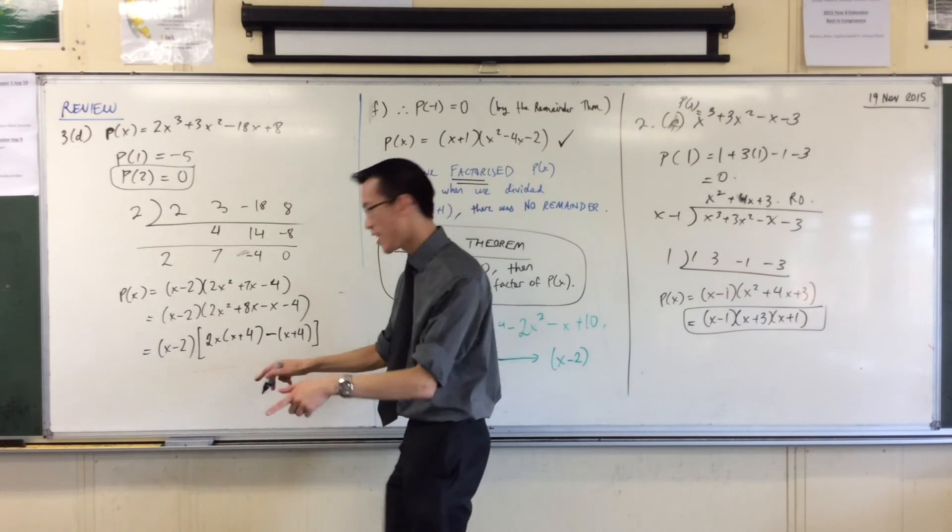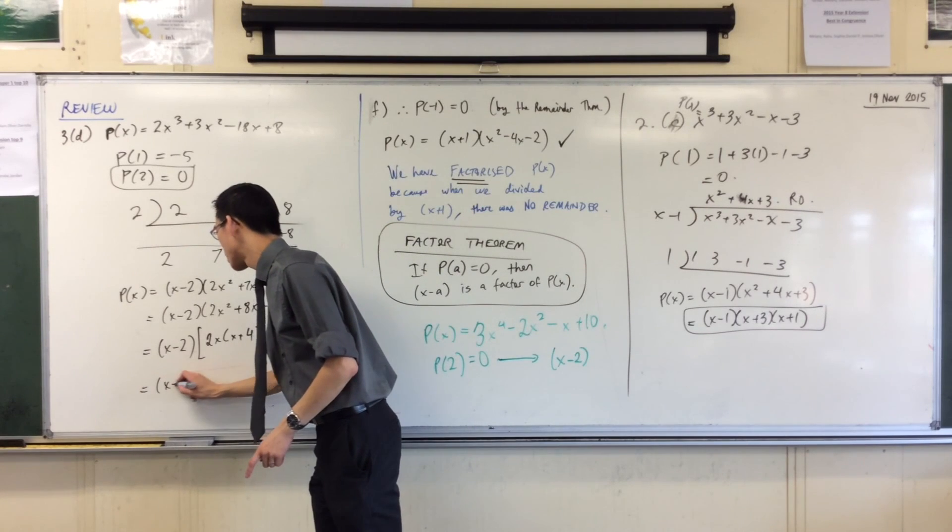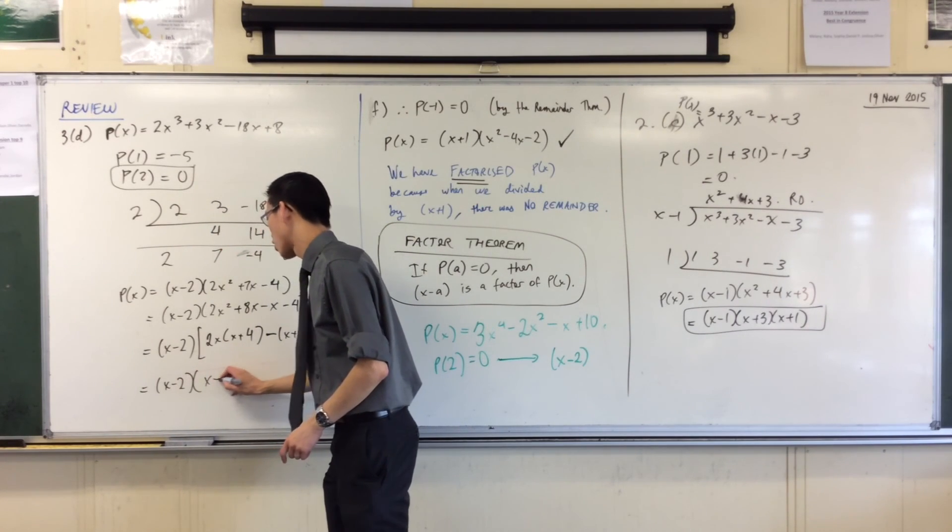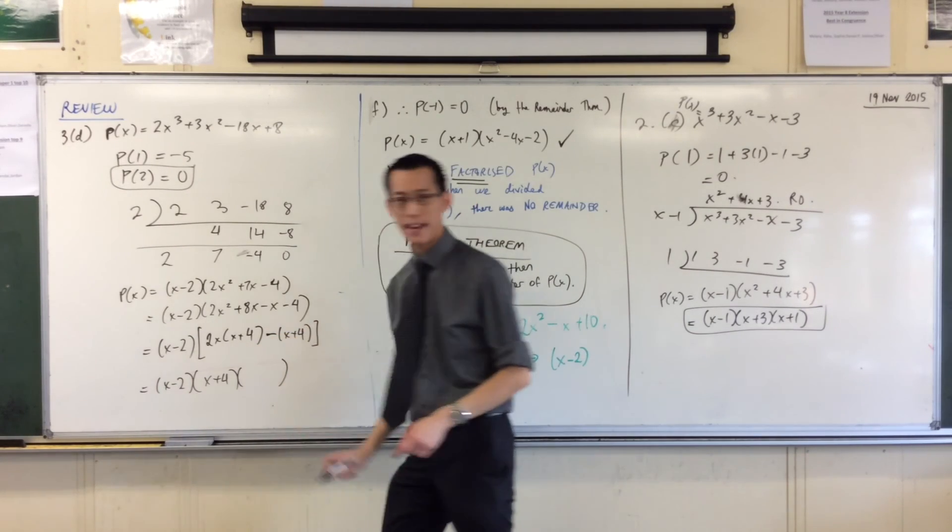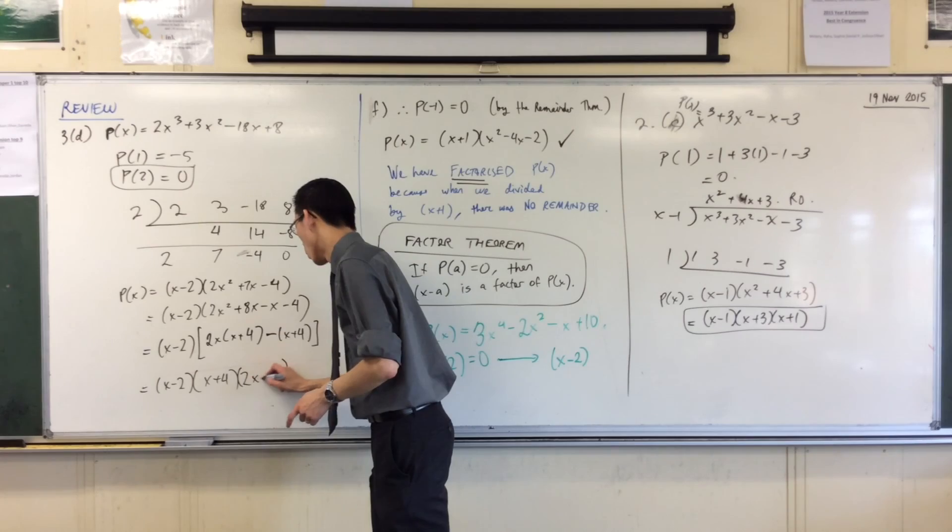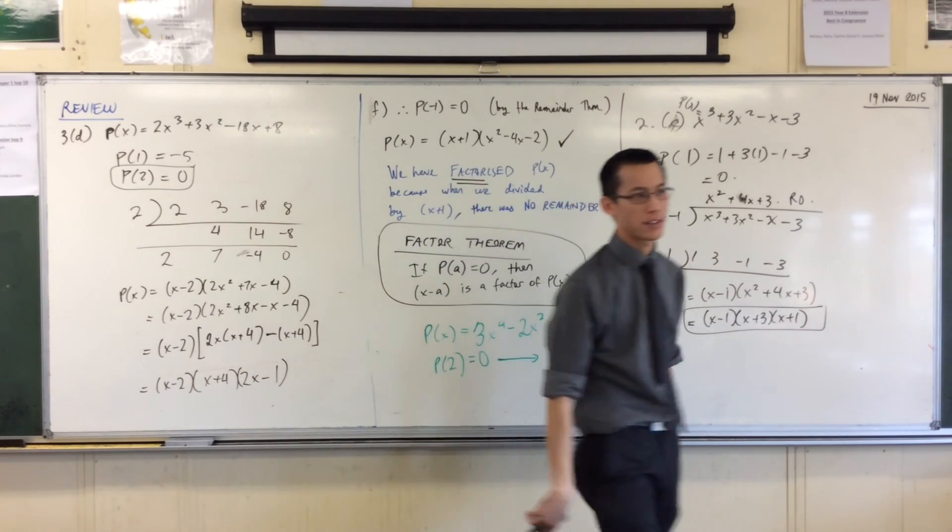So now that I've paired things up, I've got x minus 2 hanging out the front. I've got a common factor of x plus 4 for both of these. And what do I get left with? 2x minus 1. Nailed it. The whole thing is factorized.